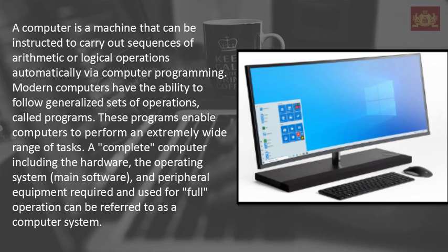A computer is a machine that can be instructed to carry out sequences of arithmetic or logical operations automatically via computer programming. Modern computers have the ability to follow generalized sets of operations called programs. These programs enable computers to perform an extremely wide range of tasks. A complete computer including the hardware, the operating system, main software, and peripheral equipment required and used for full operation can be referred to as a computer system.